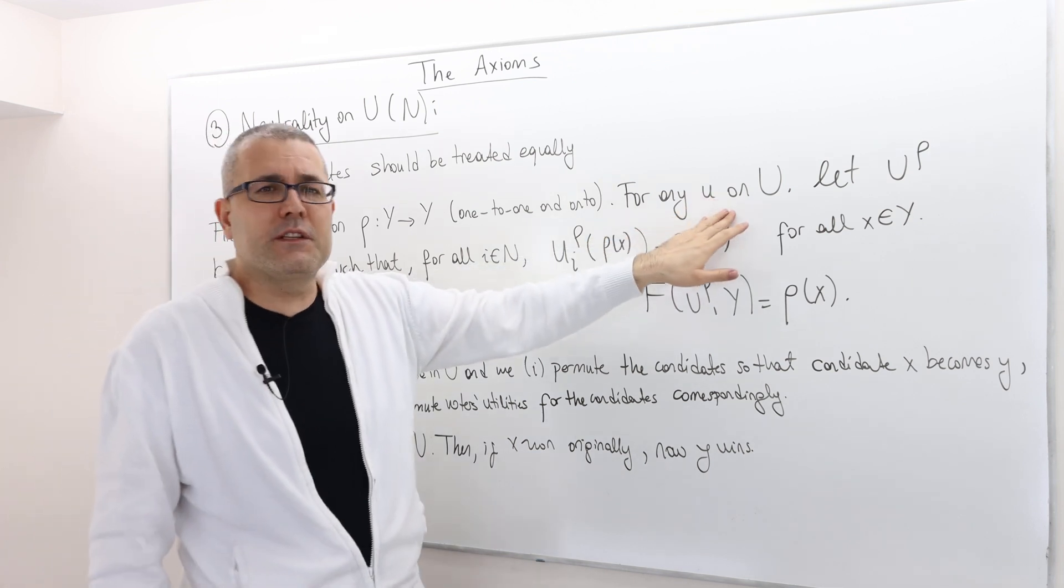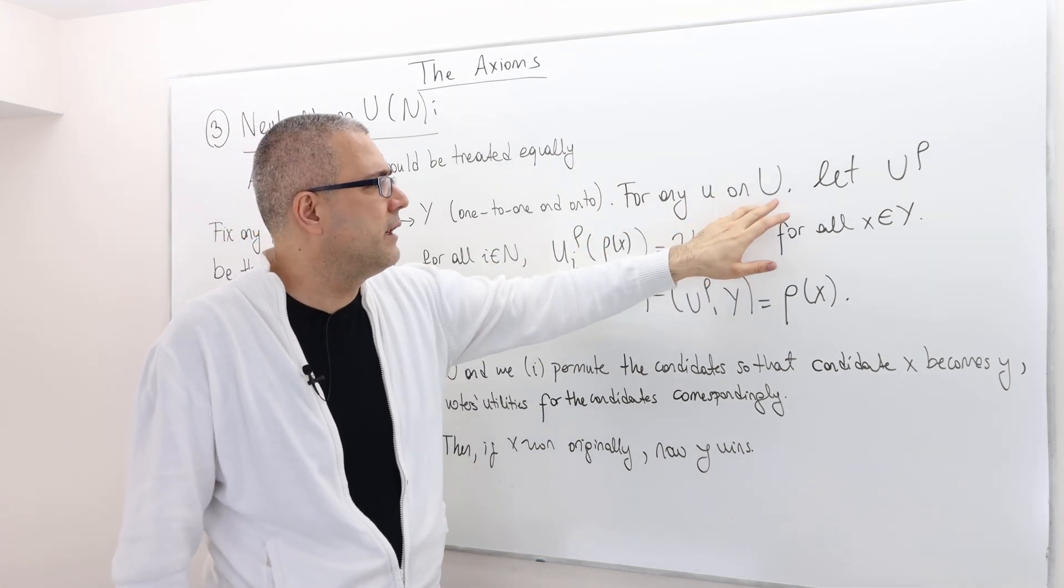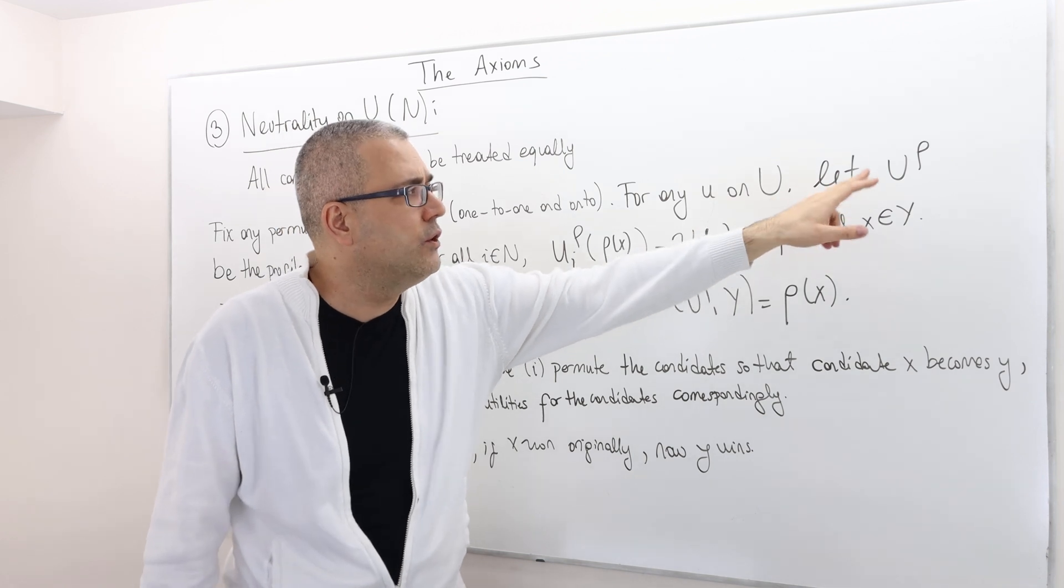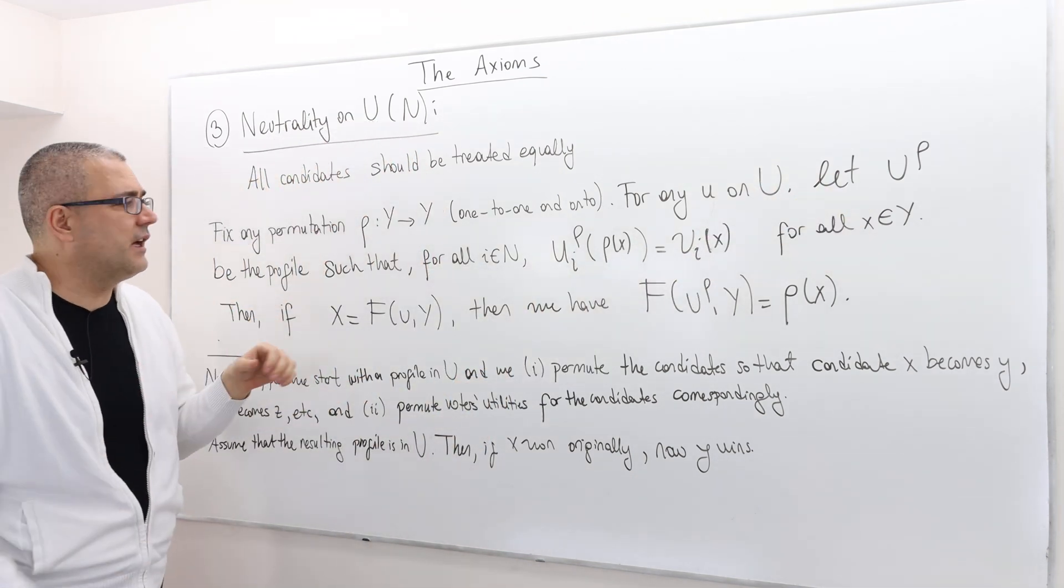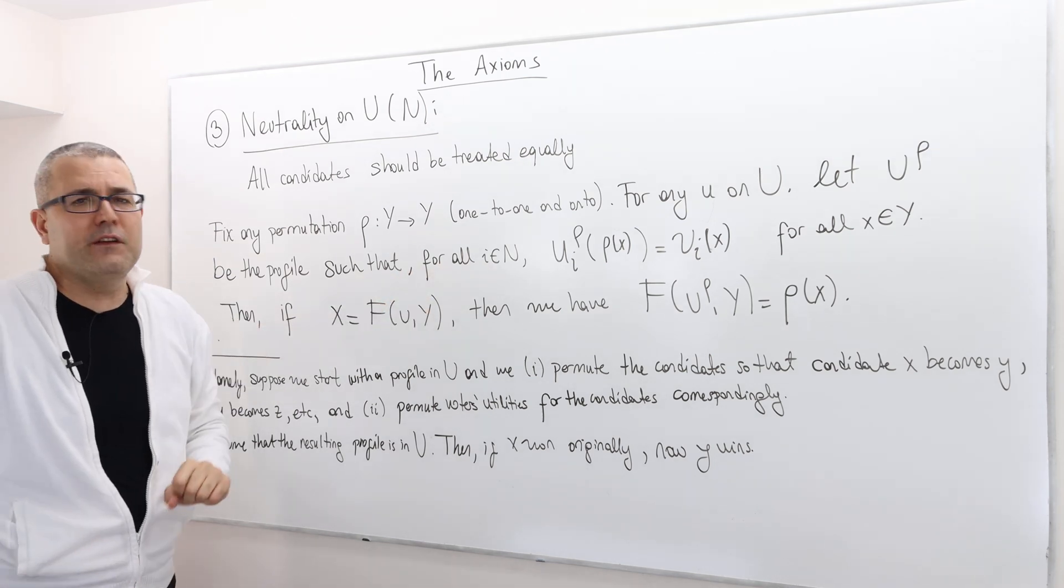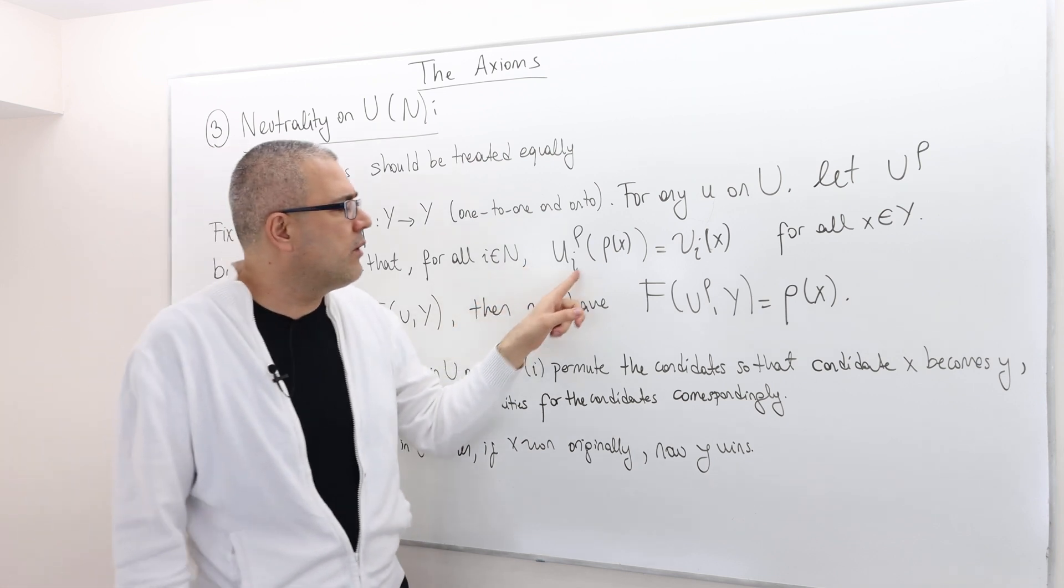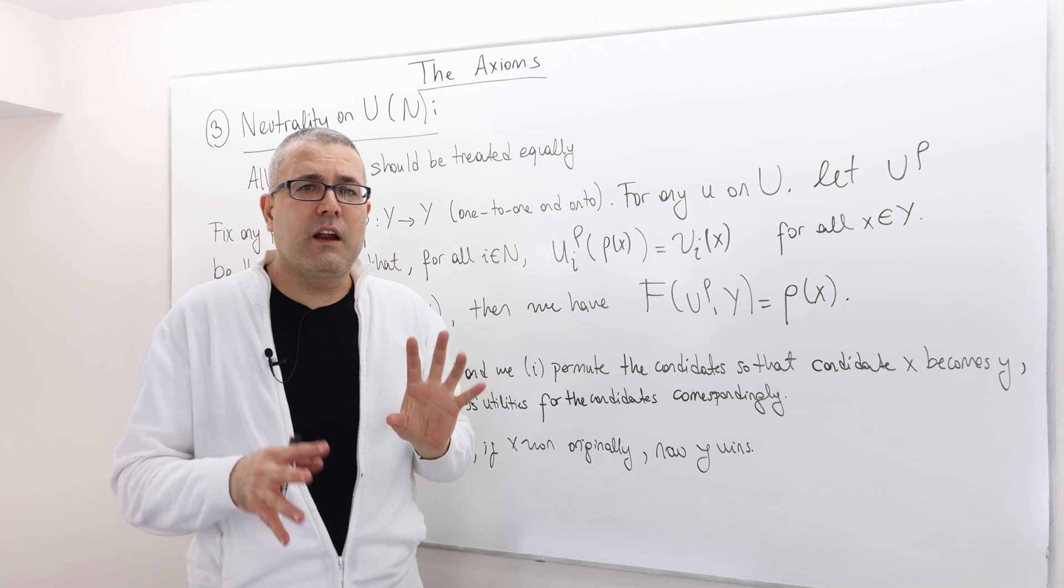For any preference profile u on my restricted preference domain U, let U of rho be the permuted preference profile such that for every voter i, u_i^rho(ρ(x)) is nothing but u_i(x), all right?